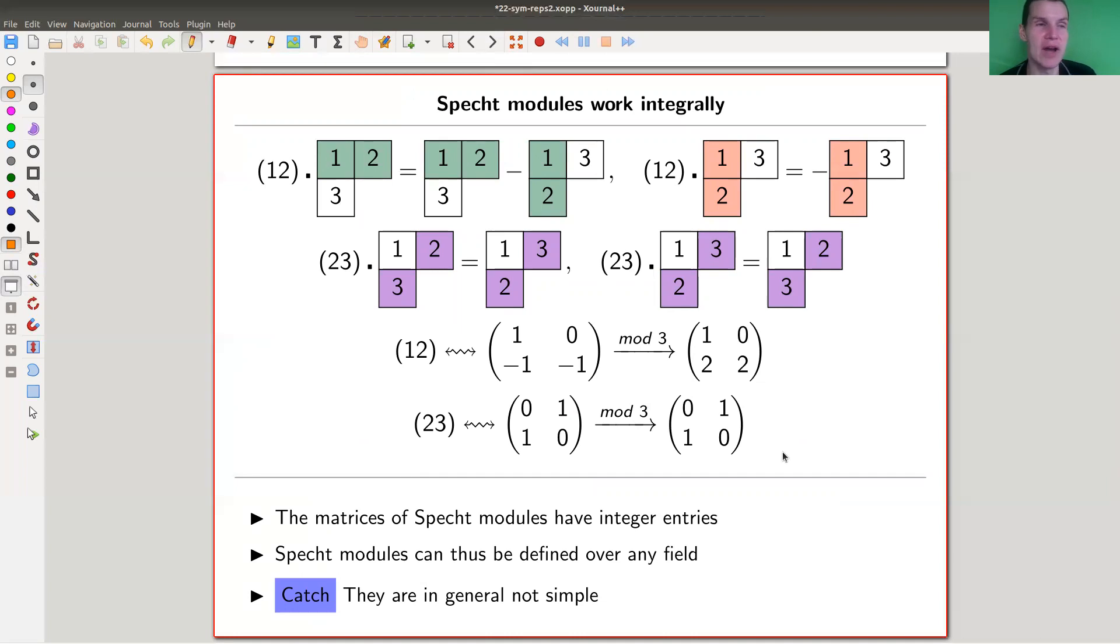Part of the reason why this is so important is they work over Z, if you want. So they work over any field. Those Specht modules are really defined over any field, and if you look at them, you really see integral matrices. You will never see any funny entries. Either permute, which is just an entry one, you have an eigenvalue one, eigenvalue minus one. I haven't told you about the error terms, but they also have integer coefficients.